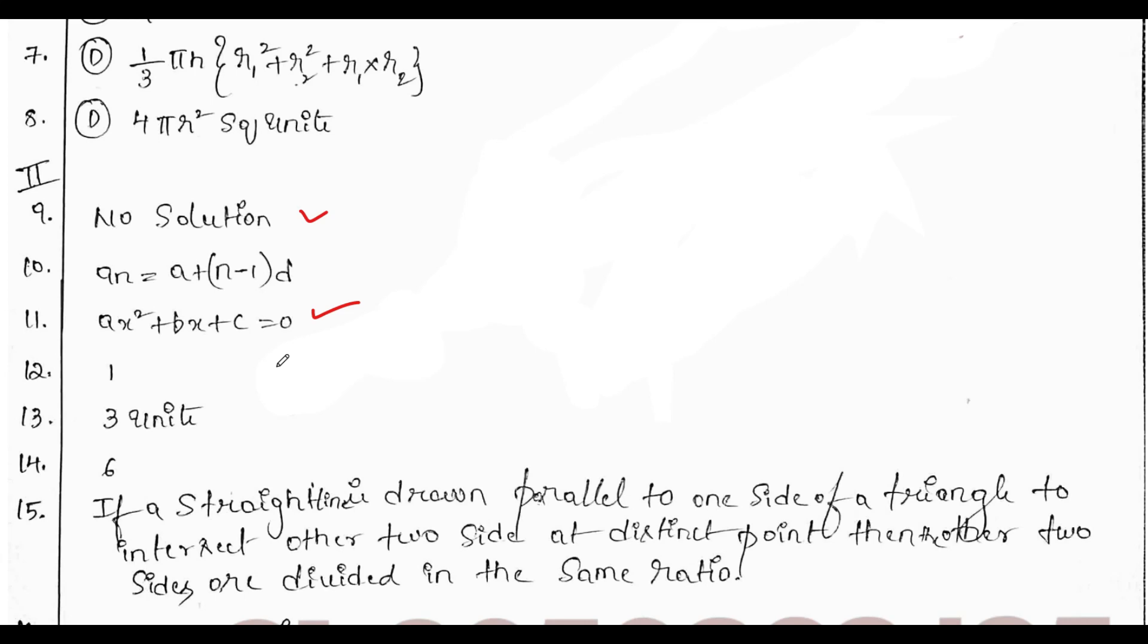Next, the answer is 1. Twelfth question, sine 18 degree divided by cos 72 degree, it will cancel out, it will get 1. Next, the distance of the point from the x-axis will be 3 units.